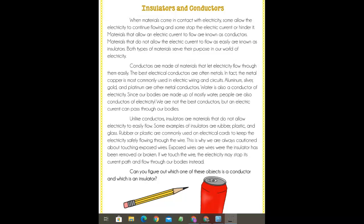Rubber or plastic are commonly used on electrical cords to keep the electricity safely flowing through the wire. This is why we are always cautioned about touching exposed wires. Exposed wires are wires where the insulator has been removed or broken. If we touch the wire, the electricity may stop its current path and flow through our bodies instead.